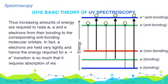Sigma electrons are held very tightly, and therefore the energy required for the σ→σ* transition is so high that it requires absorption of wavelengths from the far UV region. Ordinary ultraviolet spectrophotometers do not cover the far UV range. Therefore, UV spectroscopy does not provide any information about sigma bonds, and saturated compounds like alkanes cannot be analyzed by UV spectrum.